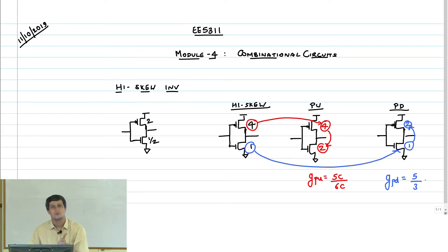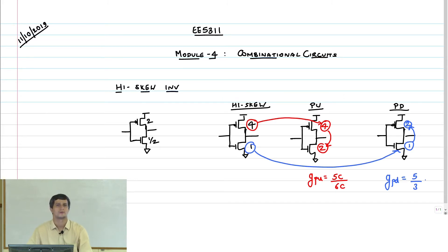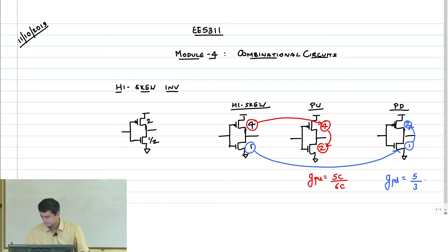It does not matter whether I take 2 and a half, 1 and 4, or 2 and 8 — all of that gives the same result. Any questions on the high skew or low skew inverters?